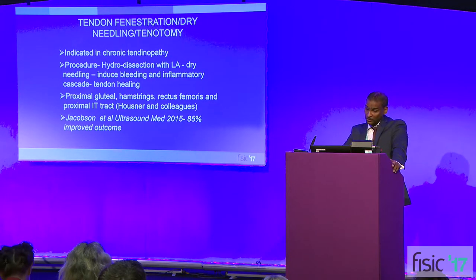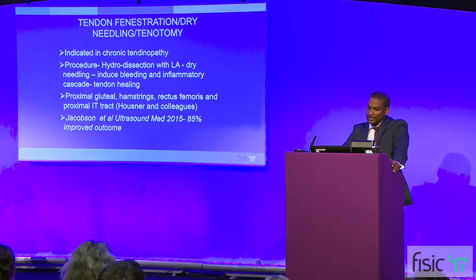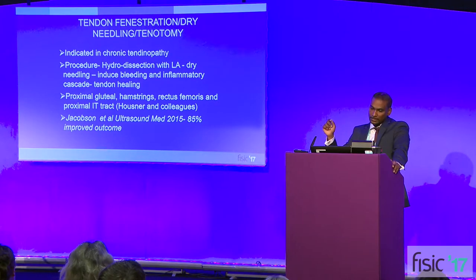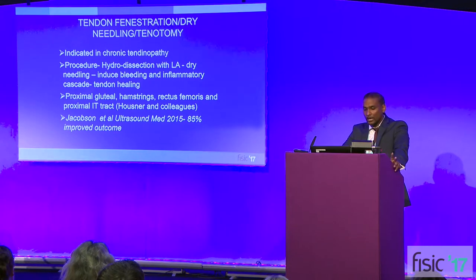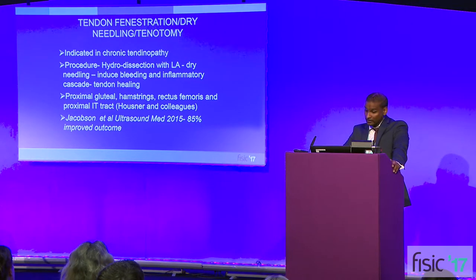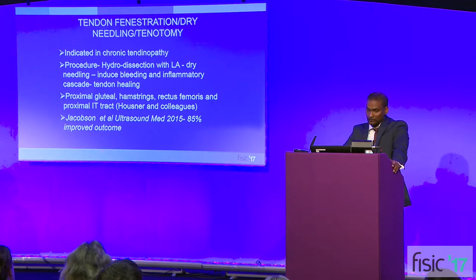In chronic tendinopathy, rather than active inflammation, it's chronic tendon degeneration which is the problem, so repeated corticosteroid injections are not going to make any impact. What has been shown to work is tendon fenestration or dry needling technique, where you insert the needle directly into the affected tendon, inject local anaesthetic to perform hydrodissection of the tendon fibres before making multiple micropunctures to induce bleeding and trigger the inflammatory cascade to promote tissue healing. One study from Jacobson et al. from the Ann Arbor Institute in Michigan found dry needling to be extremely effective in over 85% of subjects.